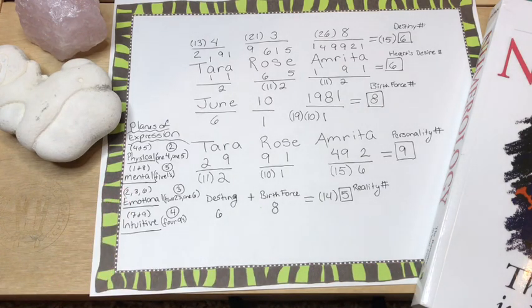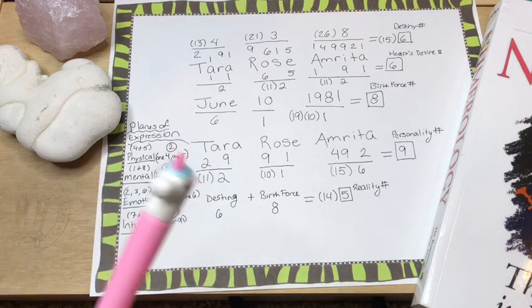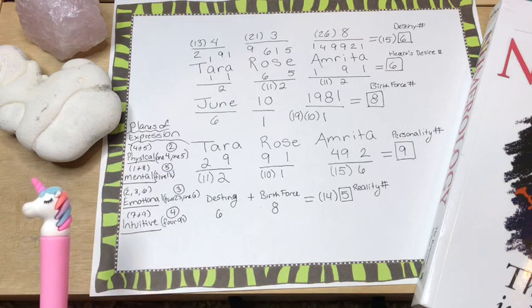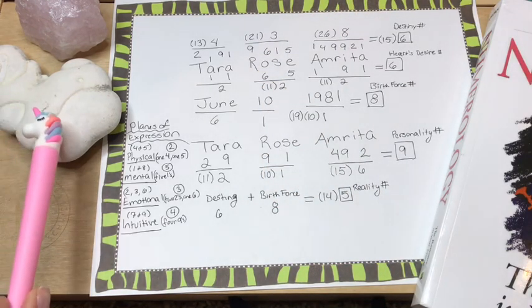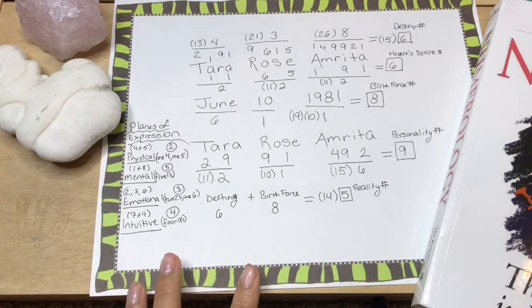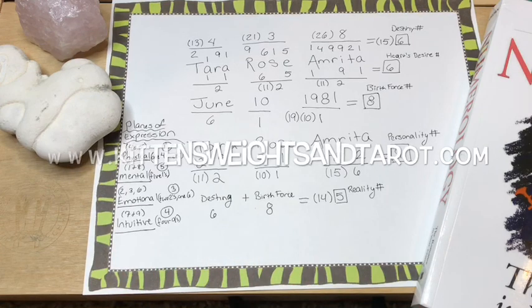When you join me for part three, we're going to be looking at what's called our challenge number, which I think is fascinating. And it's basically a number that's going to chase us our whole life through just like most of these numbers here. We're going to be looking at a number called our point of security, and we're going to be looking at our pinnacles, which affect different phases of our life. And right now I am in a nine pinnacle. You guys will figure out what that means next time.